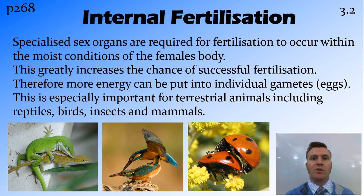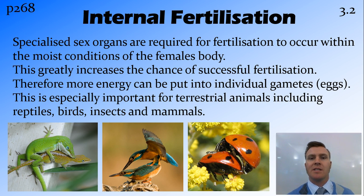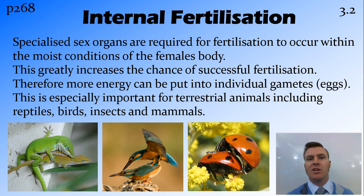This external fertilization works really well to colonize aquatic environments. However, on land, eggs and sperm tend to dry out. So rather than external fertilization, terrestrial animals have evolved internal fertilization, where the female's body creates the moist environment for fertilization to occur. This also increases the chance of fertilization, and allows more energy to be put into each gamete — for internal fertilization, it might only be a handful of eggs or even just one, compared to millions for external. This is the main form of fertilization for reptiles, birds, insects, and mammals.